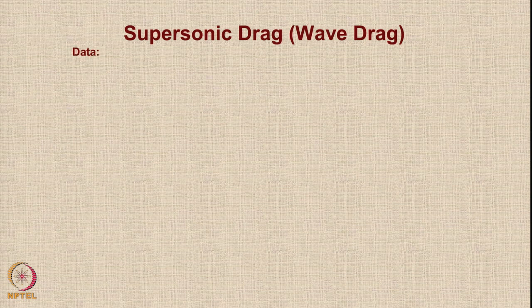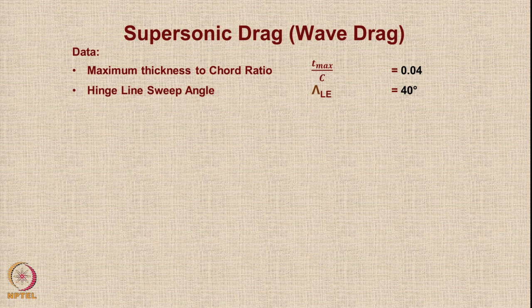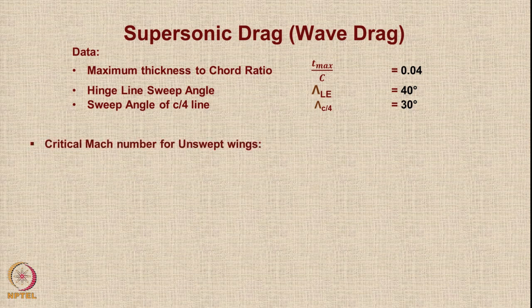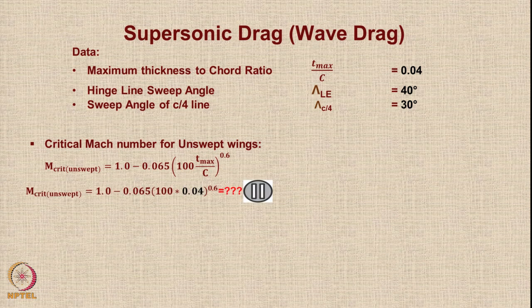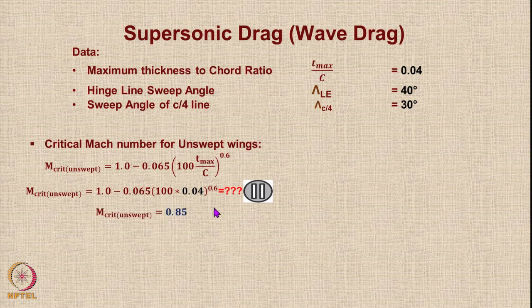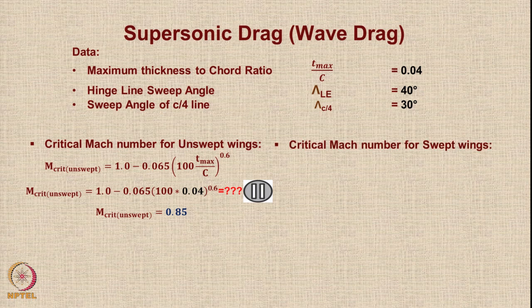Now let us move to the last aspect: supersonic drag or wave drag. The maximum t/c is 0.04, hinge sweep is 40 degrees, and quarter chord sweep is 30 degrees. We estimate the critical Mach number for swept wings using the standard formula: M_critical = 1 − 0.6065 × (100 × 0.004)^0.6, which gives M_critical = 0.85.